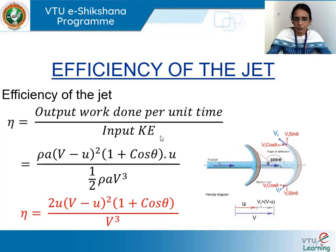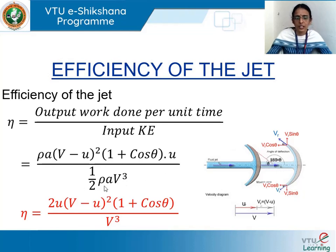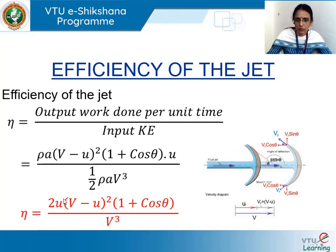We now have both the output power and the input power. Efficiency equals output power divided by input power. The output power is Fx × u = ρA(v − u)²(1 + cosθ) × u, and the input power is ½ρAv³. Substituting and simplifying, the efficiency of the jet is: η = 2u(v − u)²(1 + cosθ) / v³, where u is the vane velocity, v is the jet velocity, and theta is the vane angle.